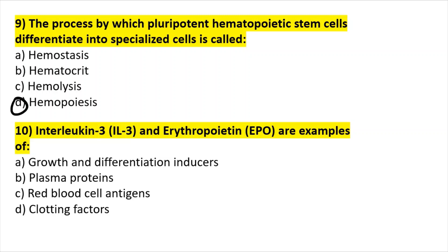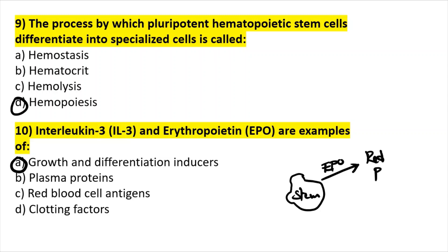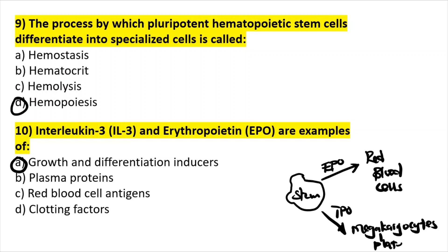Question ten: interleukin-3 and erythropoietin are examples of growth and differentiation inducers — not plasma proteins, not red blood cells, not clotting factors. Erythropoietin, produced by the liver, tells a stem cell to differentiate into red blood cells. Thrombopoietin tells the stem cell to differentiate into megakaryocytes, which make platelets.